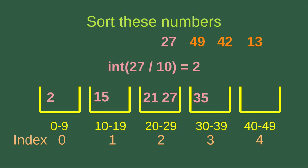Bucket index 2 handles elements in the range 20 to 29. Now for the fifth element, 27: 27 divided by 10 gives 2.7, and the integer part is 2, so 27 also goes to bucket index 2, which handles numbers between 20 and 29. For 49: the integer part of 49 divided by 10 is 4, so 49 goes to bucket index 4, which handles numbers in the range 40 to 49.